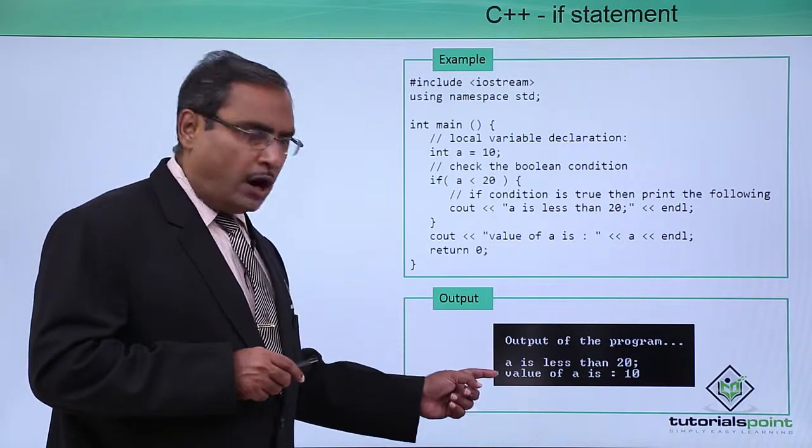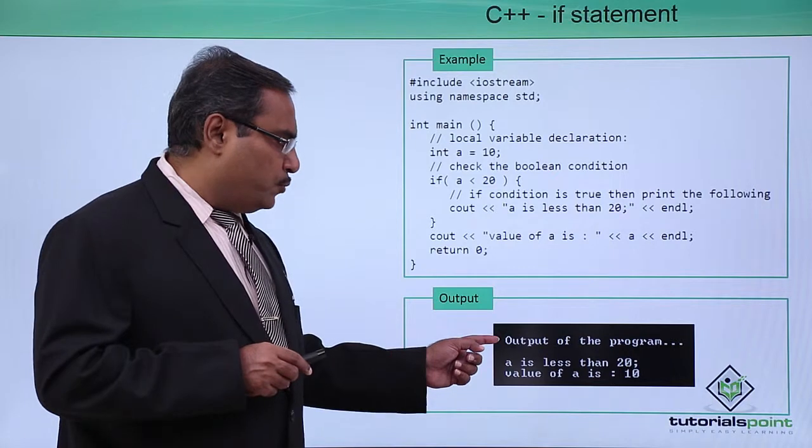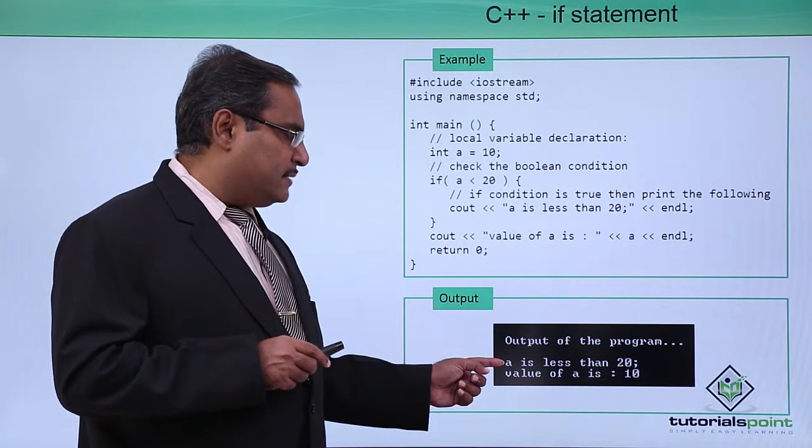Here is the respective code output for us. Output of the program: a is less than 20.